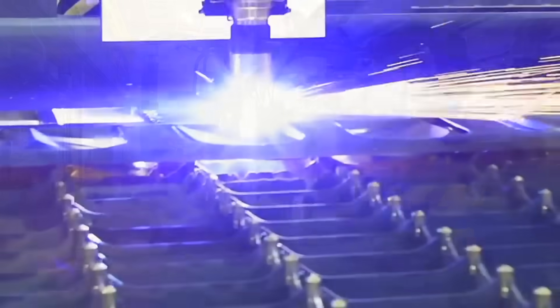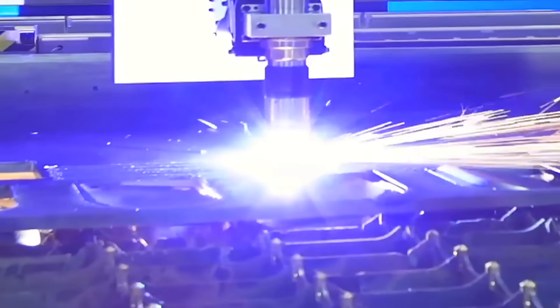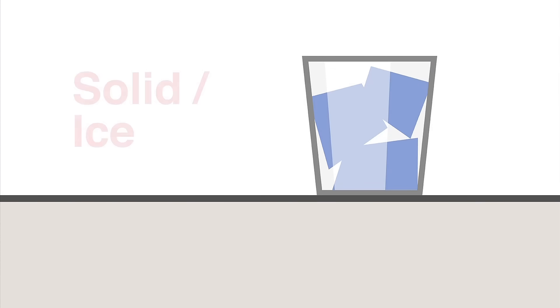But first, what is plasma? Plasma is often called the fourth state of matter. Let's take a look at the three other states we're all familiar with. They are solid, liquid, and gas.